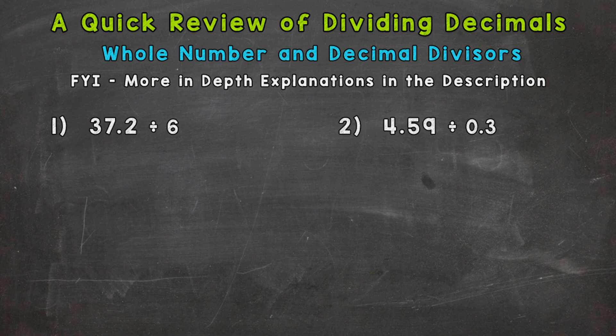We're taking a decimal and dividing it by a whole number. We set it up as 37.2—that's our dividend—and our divisor or outside number is 6. When dividing decimals, the first thing you should look at is the divisor. This 6 is a whole number, so we can bring our decimal straight up.